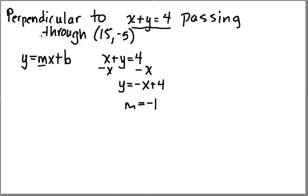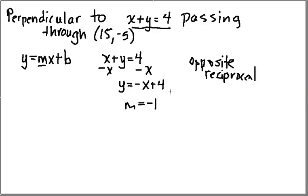Now I'm trying to construct a perpendicular line. Perpendicular lines have slopes that are opposite reciprocals — opposite meaning change the sign, and reciprocal meaning take the reciprocal of the given slope. My current slope is negative 1, so opposite makes it positive, and the reciprocal of 1 is just 1. So my new slope is going to be 1.